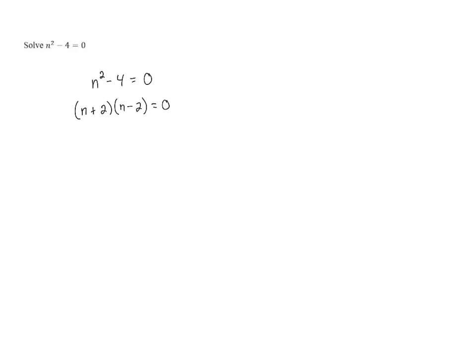And after we factor the polynomial, we need to take each of those factors and set them equal to 0. So we've got n plus 2 equals 0, or n minus 2 equals 0.